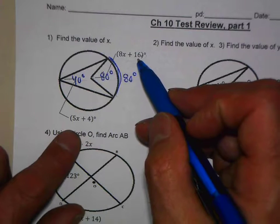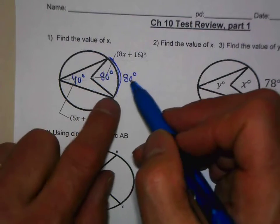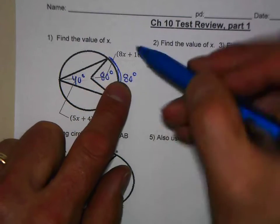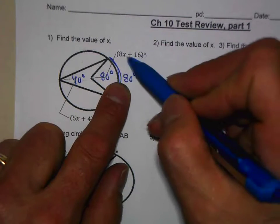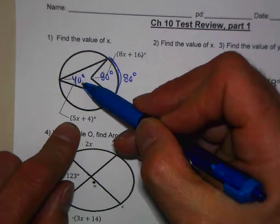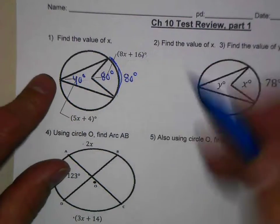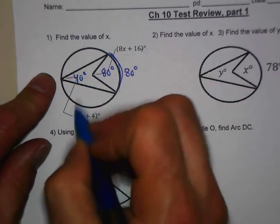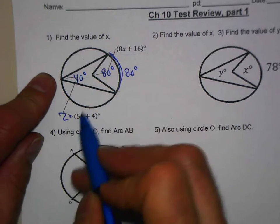So I could either say that one half of this central angle equals this inscribed angle, or which is the better way that I like to do, is say two times your inscribed angle equals your intercepted arc or in this case your central angle. As you know, both of those are equal to each other.